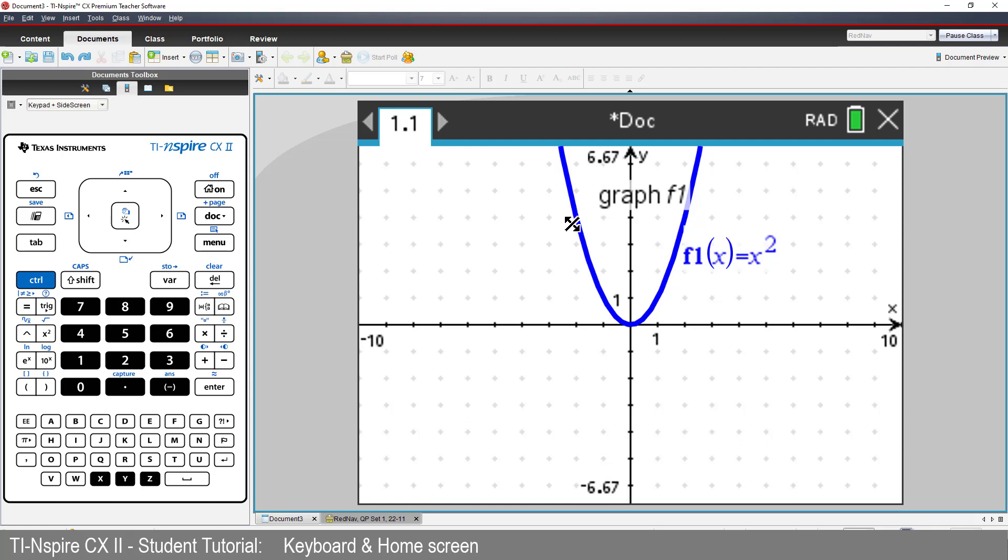Click and hold the centre of the touchpad to grab the curve. Notice now that the mouse changes to a closed hand. Swipe your finger across the keypad to dilate the function. To release the grip, press Escape or just click again.